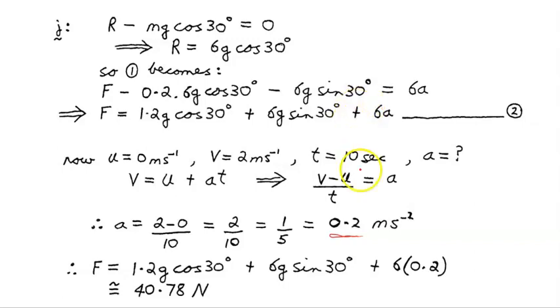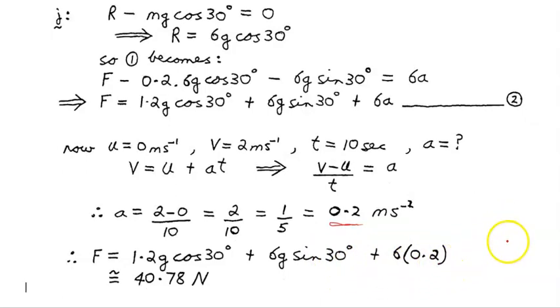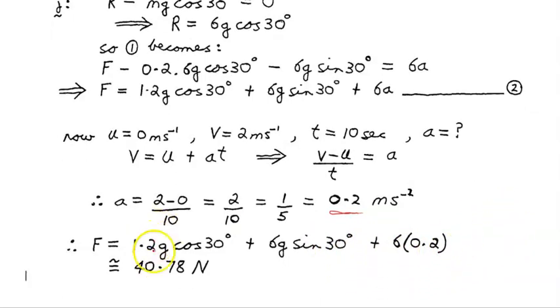So having done that, substituting into equation 2, we have 1.2 times G times cos 30 plus 6G sin 30 plus 6 times 0.2, and when we evaluate that, we find that we get 40.78 newtons, parallel to the plane and up. So the total force was 40.78 newtons.